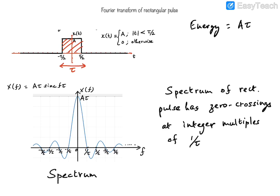Now, having established that the spectrum of a rectangular pulse is a sinc function, we want to investigate what changes will happen to this spectrum when we alter the width of the pulse while keeping the energy constant. If we reduce the width of the pulse while keeping the energy constant, the height of the pulse will have to be proportionately increased, since energy equals A times tau — if we reduce tau by a certain factor, the height A must increase by the same factor.